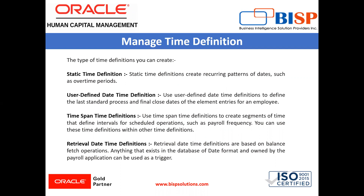First is a static time definition. It creates a recurring pattern of dates such as overtime periods. For example, a company's overtime period is a standard five day work week. You can create a static time definition with a weekly frequency that generates time periods for three years.